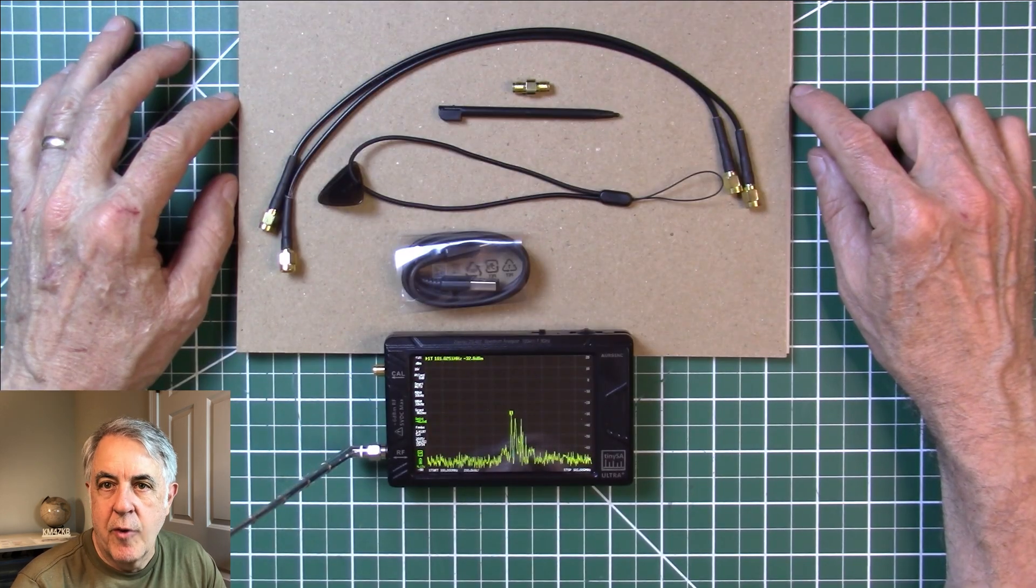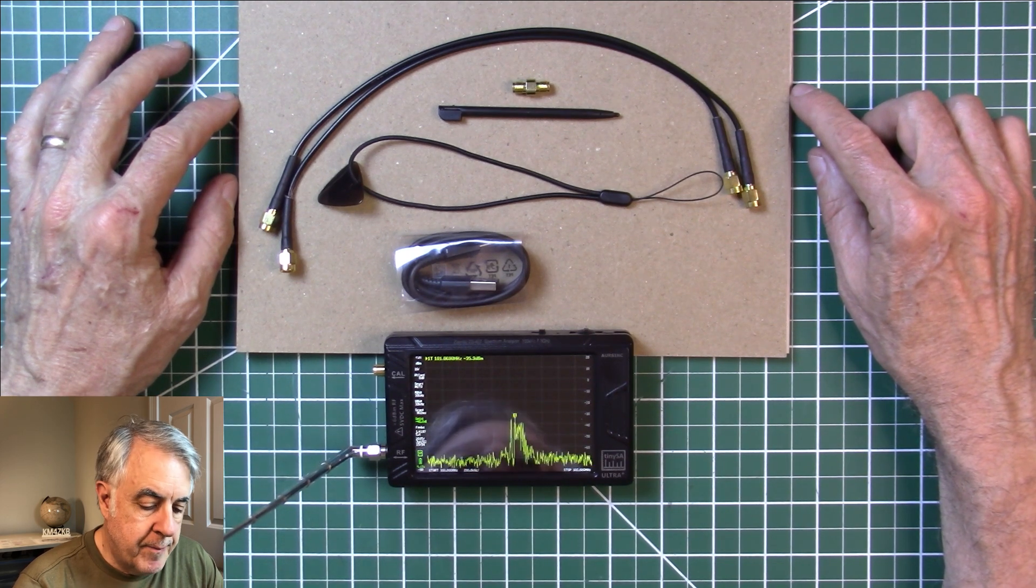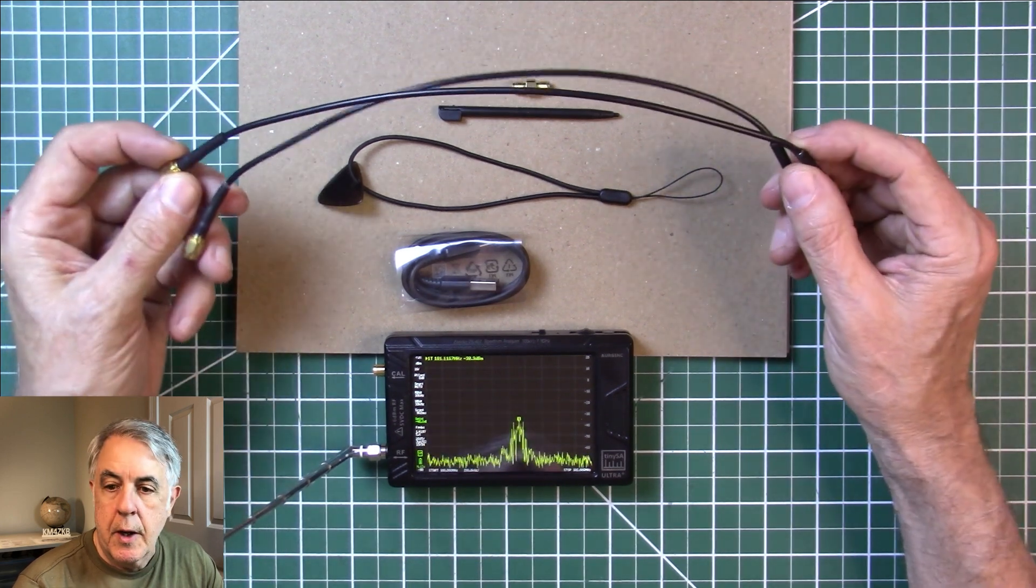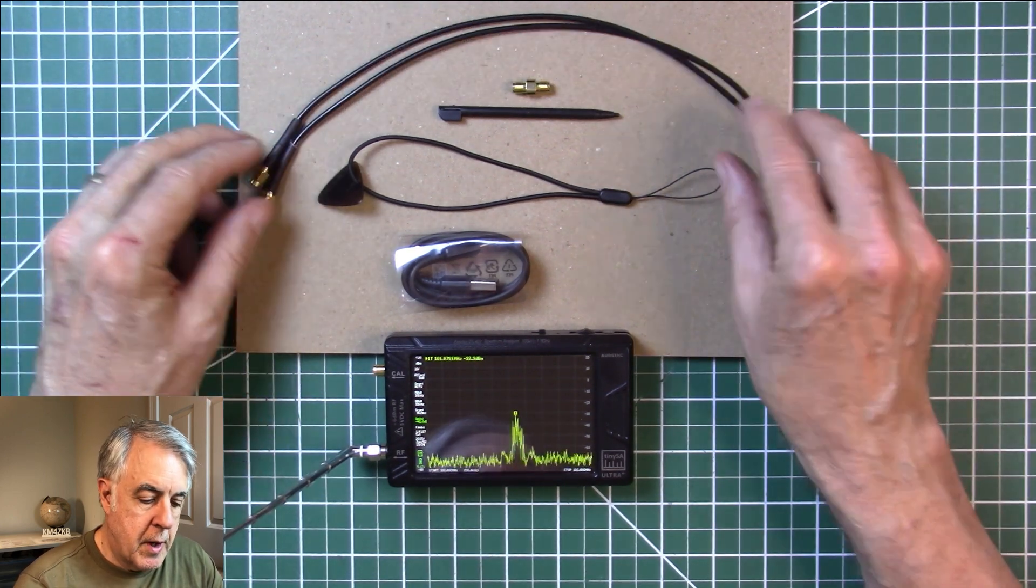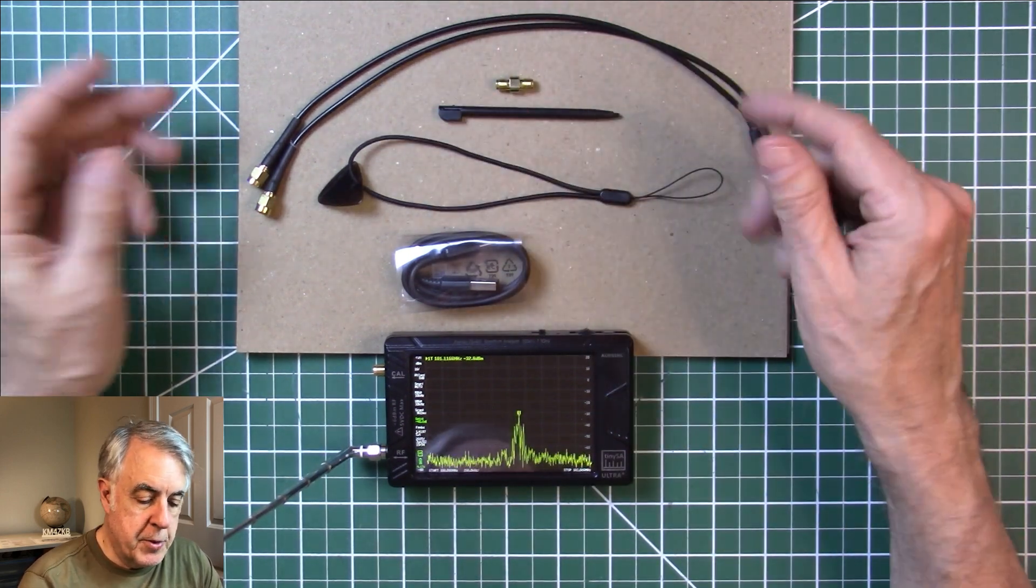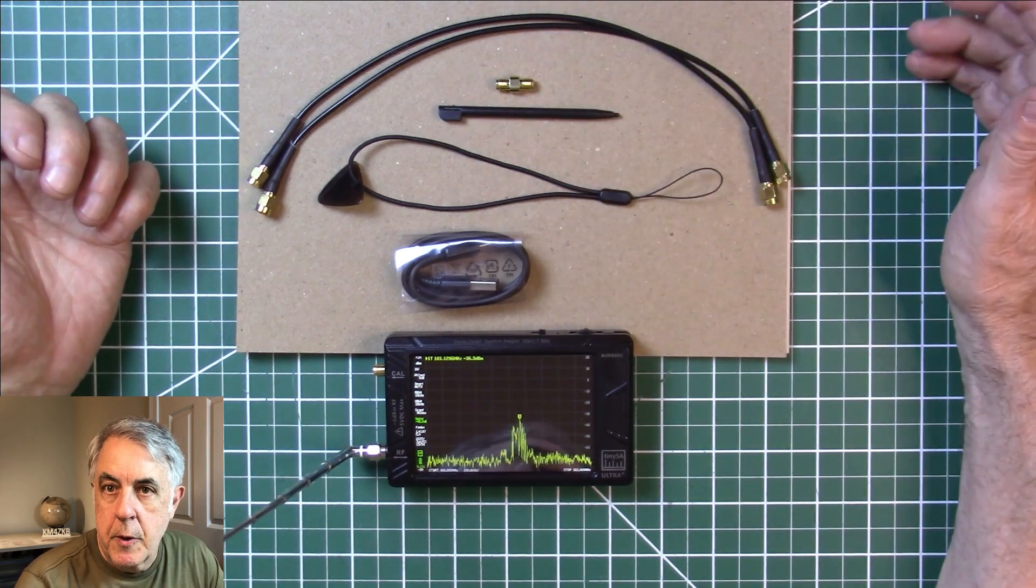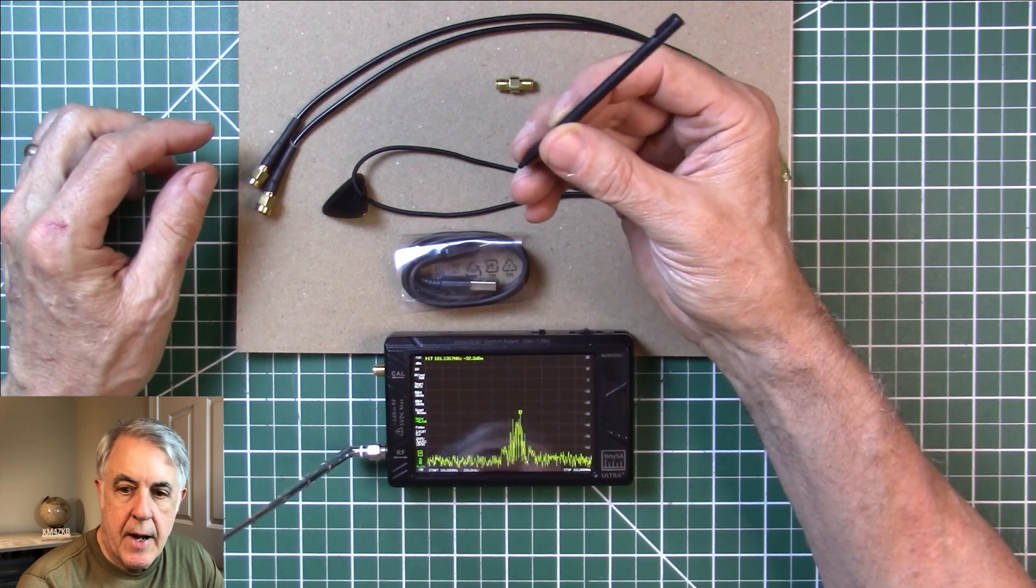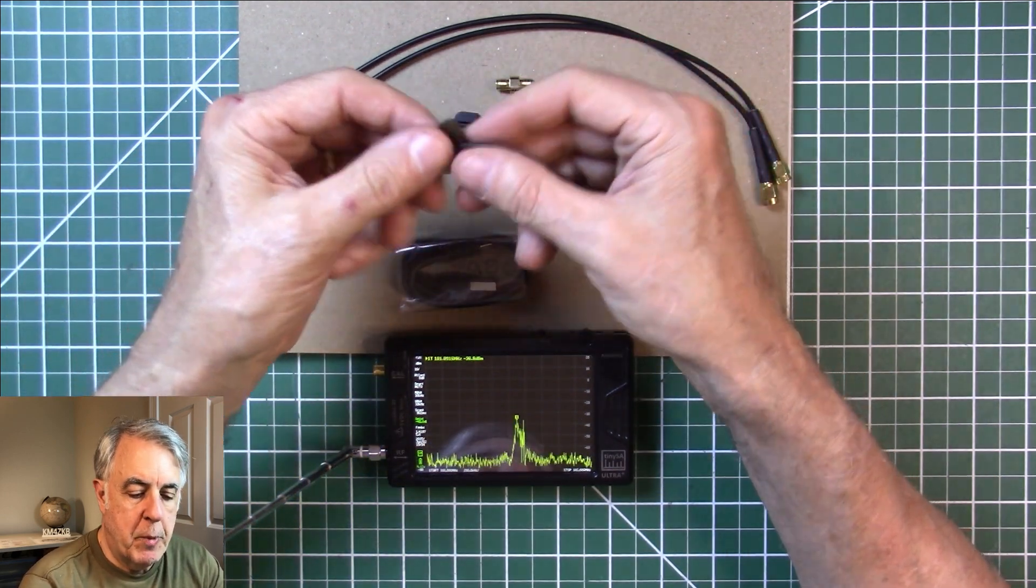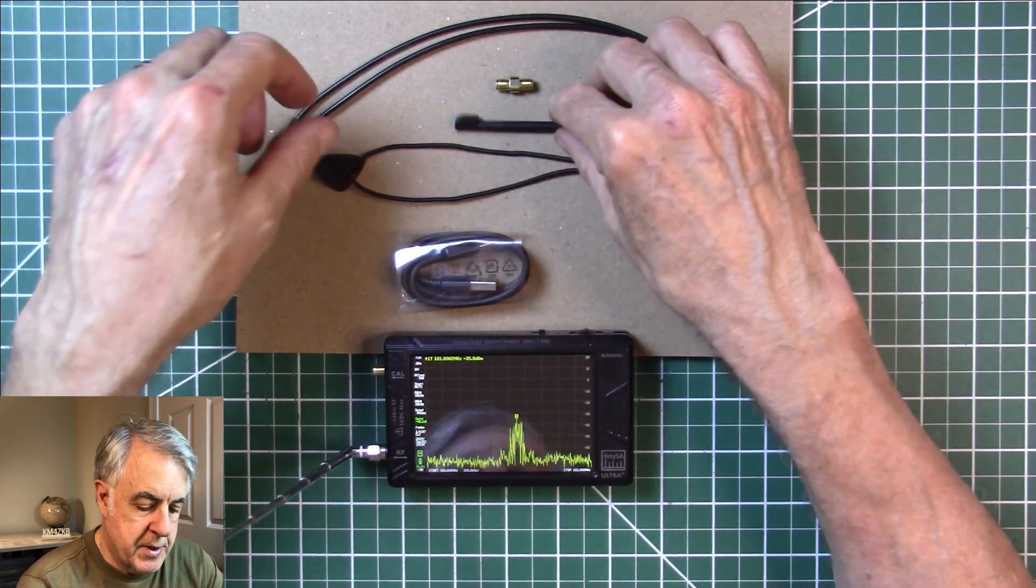Okay, this is the ZS407, the new version of the Spectrum Analyzer by OurSync. These are the components that come with it. You get two cables, a double female connector to connect the two cables together or to connect a device under test to the Spectrum Analyzer. There is a stylus and a PIC that can also be used as a stylus, and this one can be connected to the device itself.